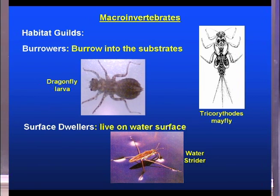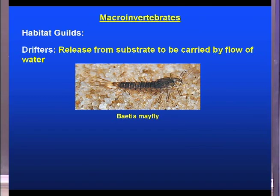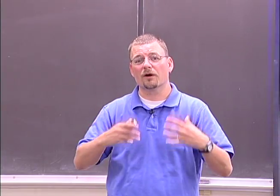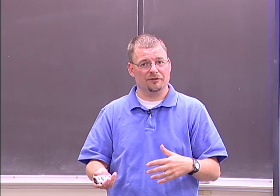Surface dwellers — I'm sure we've all seen these, maybe even tried to sink one or two. These are water striders that skip across the surface of the water; they have small hairs on their feet that allow them to use a snowshoe effect on the surface tension of the water. Lastly, drifters use the flow of the water to their advantage — they hang out on the substrate, get what they need, and when it's time to move on they let go and the water carries them to the next place. Drifters generally also have some swimming ability so they can return to the bottom when needed.